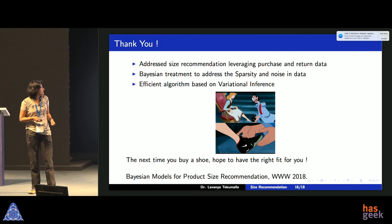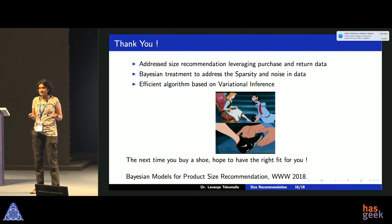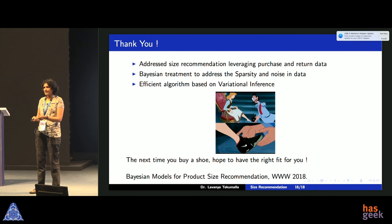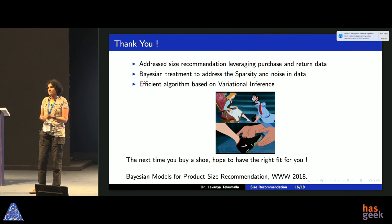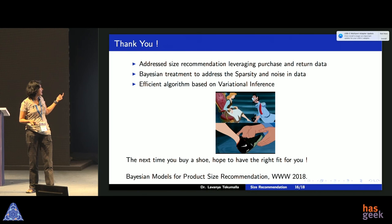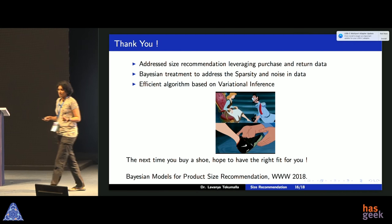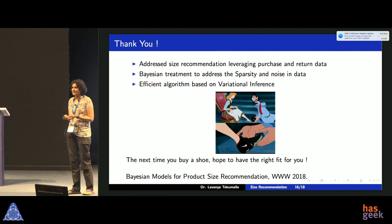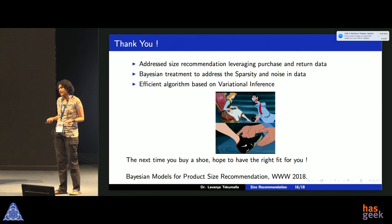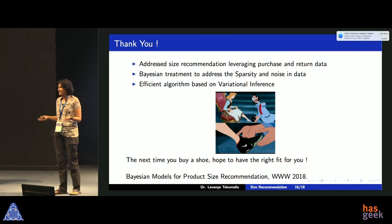To summarize: we addressed the size recommendation problem leveraging purchase and return data. In our situation, the Bayesian approach made sense because of data sparsity and noise — we found distributions rather than point estimates, then applied variational inference with fast, efficient closed-form updates. That said, this is a very tough problem. The data remains noisy, and we may not be able to make confident recommendations in many cases. We've just taken the first step, and more work is required. Hopefully the next time you buy a shoe, it'll be the right fit.